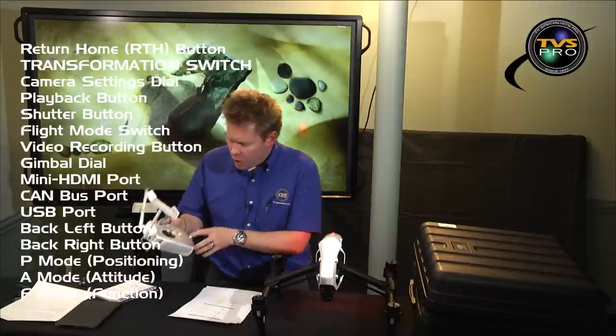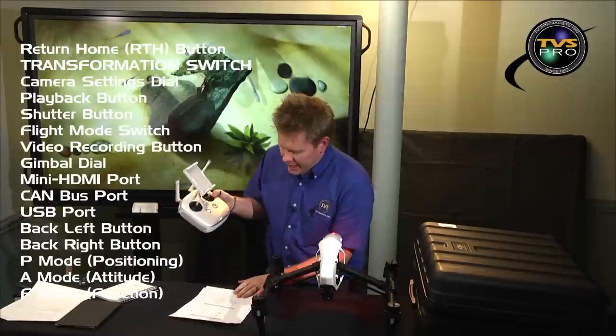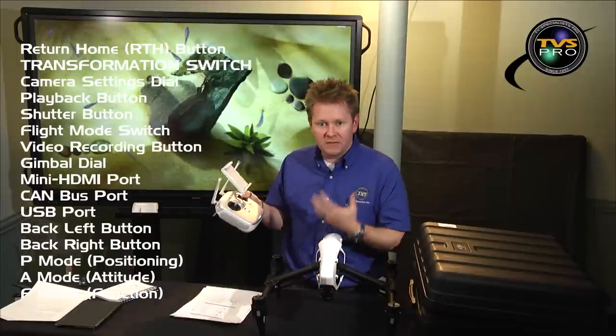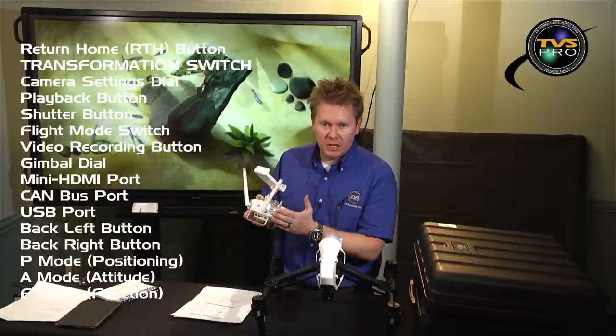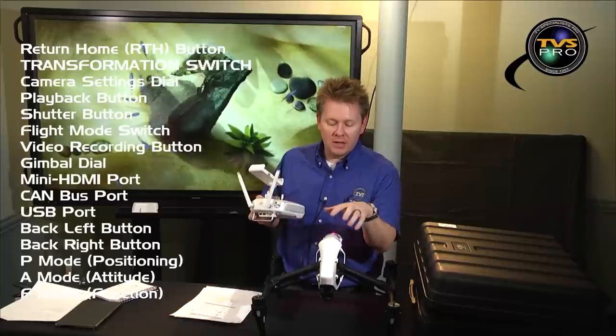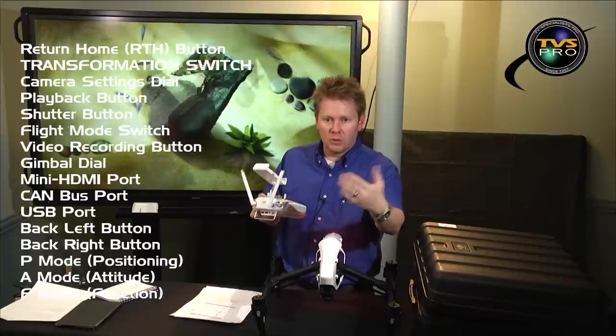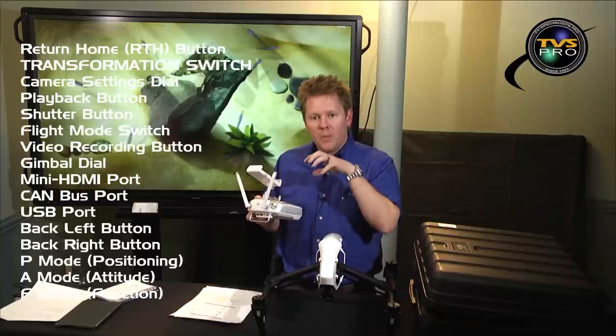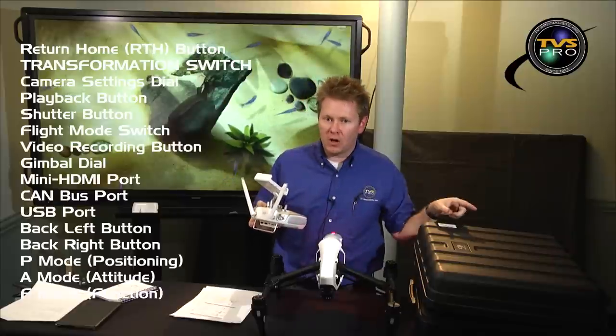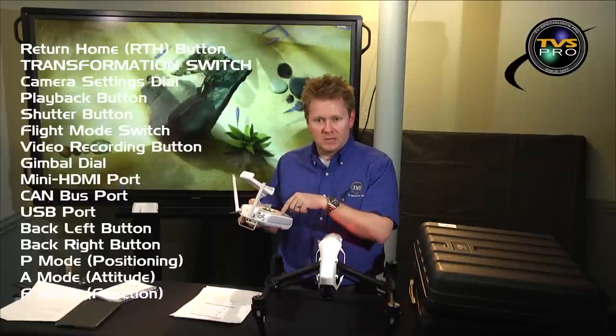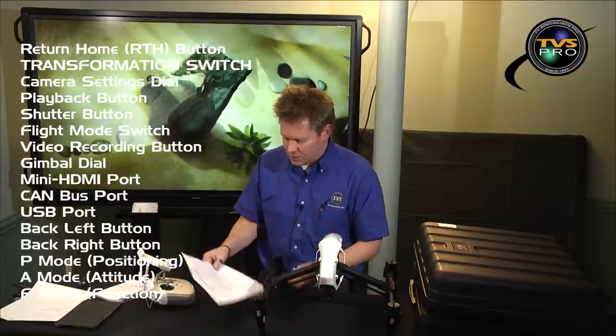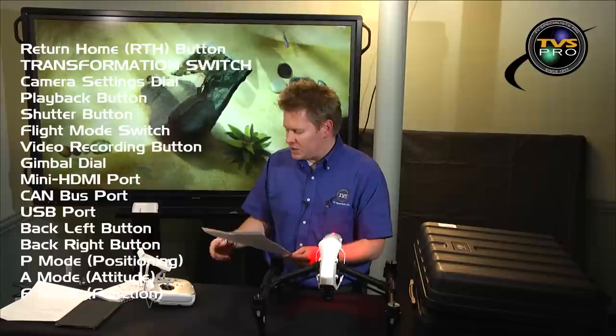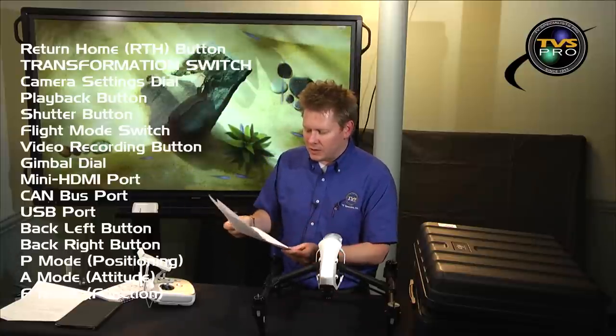So the return to home button kind of covered that. What's cool about this and different from the Phantom is that this has dynamic home point. What that means is there is a built-in GPS module in here and the Inspire 1 copter will reset its home point based on the location, not where it took off from, but its remote, the master remote. And you can go in and out of those features if you want to. The transformation switches I mentioned with the landing gears.